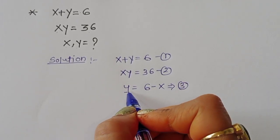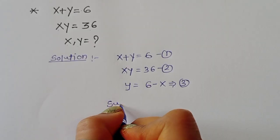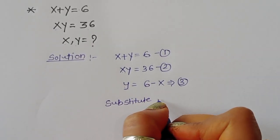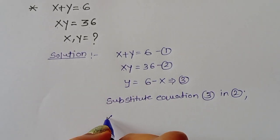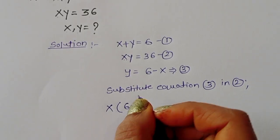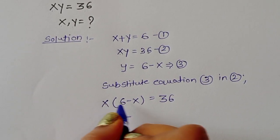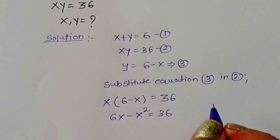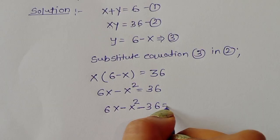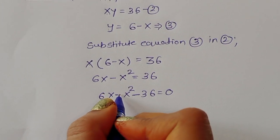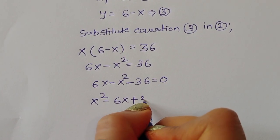Now we substitute the value of y from equation 3 into equation 2. So x times (6 minus x) equals 36. Expanding, we get 6x minus x squared equals 36. Rearranging, we get 6x minus x squared minus 36 equals 0. Multiplying through by minus 1 gives x squared minus 6x plus 36 equals 0.